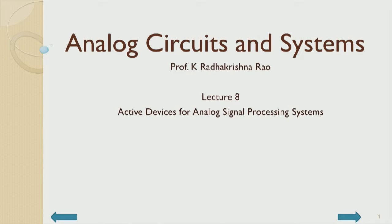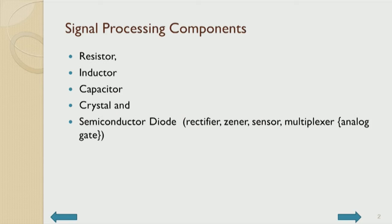Today we will be starting lecture eight, which is going to cover active devices for analog signal processing — what are the active devices used in signal processing. In the previous class, lecture seven, we had been introduced to available passive devices.